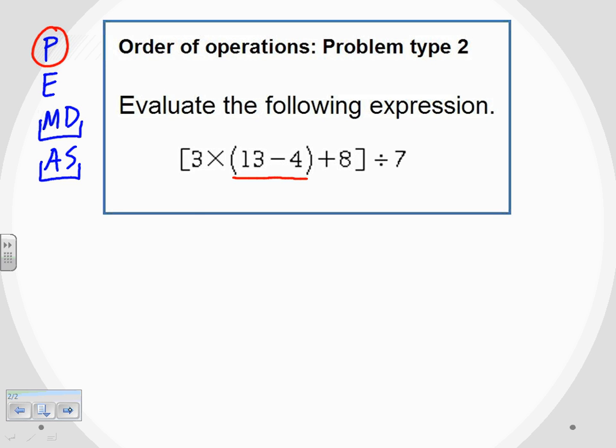So I'm going to write down everything else the same. We have three times, but now 13 minus four inside those parentheses, I can go ahead and do that. 13 minus four, that is nine. And once I've done the subtraction, I no longer need those parentheses.